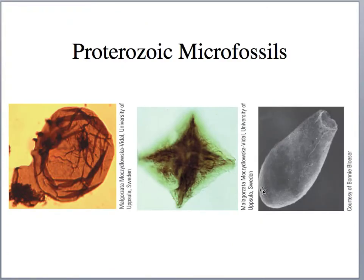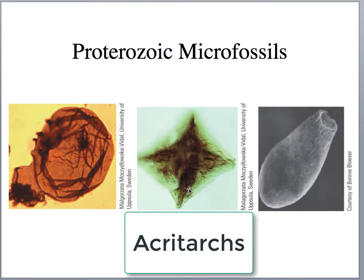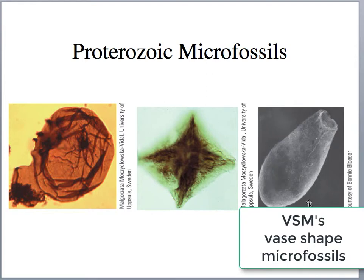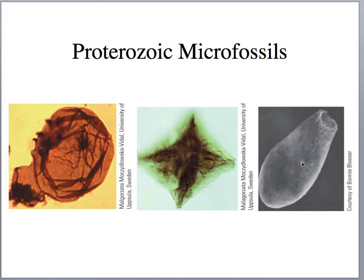Other microfossils we find are acritarchs, which are algae — maybe phytoplankton cysts — and are probably eukaryotic organisms that did photosynthesis. We also see these vase-shaped microfossils, which are cysts of eukaryotic, maybe photosynthetic organisms. We find these in the Kingston Peak Formation and the Beck Springs Formation in Death Valley and also in the Grand Canyon.